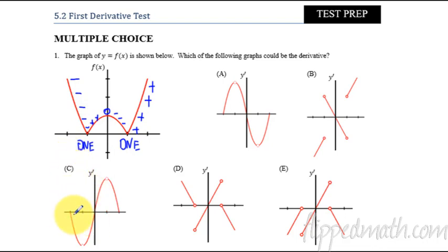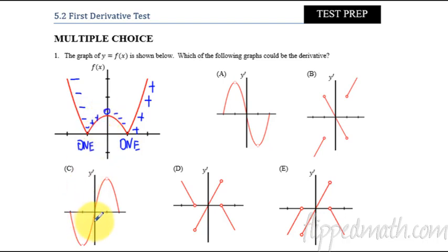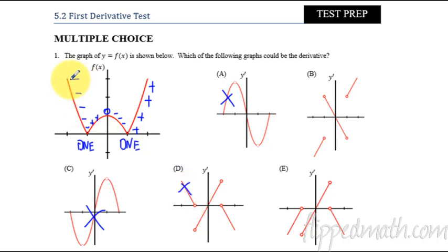Let's look at this one first. We're going to be underneath the x-axis down here, but right here it would have to be positive, so we would need to be above in this quadrant somewhere up here. That's not working right for this one, so I know it's not that. This one has to start negative, and this is starting with positive y values, so it's not that one. This one again is starting with positive y values — can't be that one because it has to start with negative.